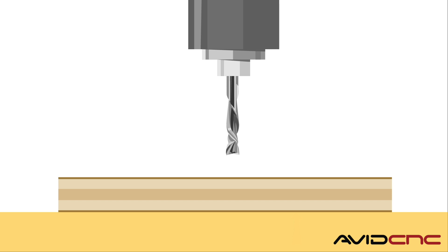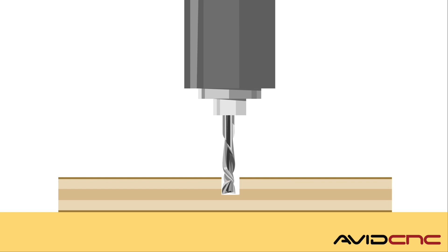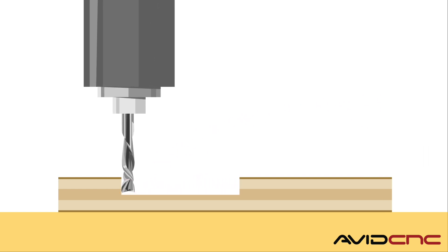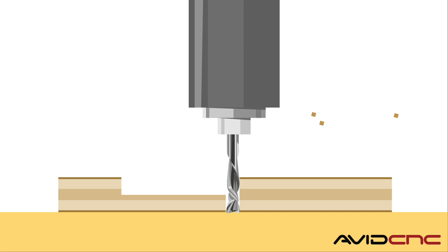On the first pass of a through cut, be sure to plunge the up cut portion of the bit below the top surface or veneer; otherwise, the top surface of the material will likely tear out due to the upward pull of the up cut geometry. Using ramps and lead-ins will also help with this.